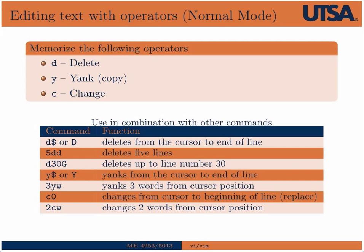We can also edit text with operators. There are basically three to memorize: D for delete, Y for yank or copy, and C for change. These are used in conjunction with movement commands. D dollar sign deletes from the cursor to the end of the line. DD deletes a line; 5DD deletes five lines.